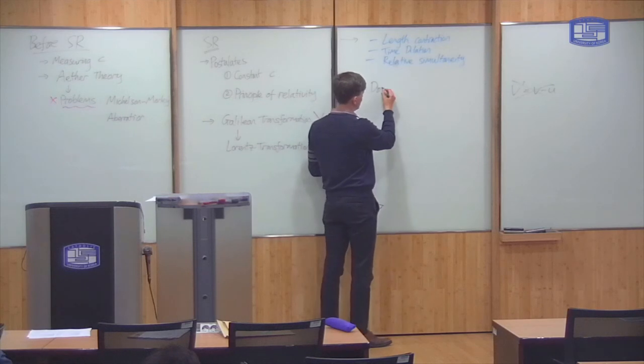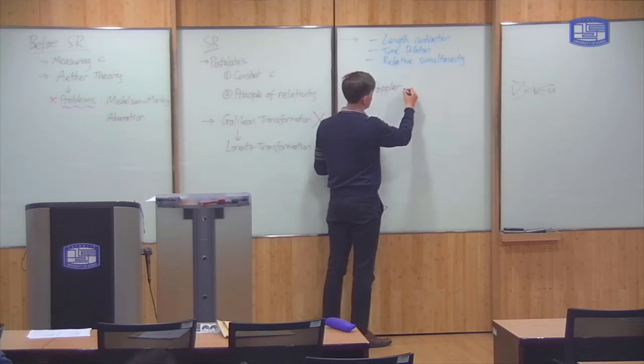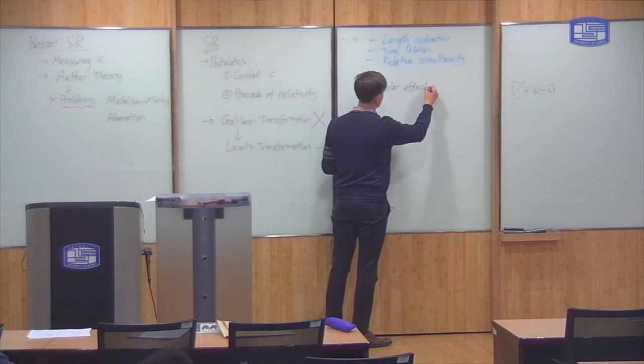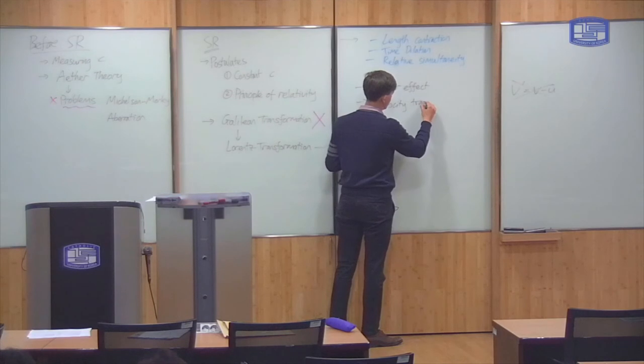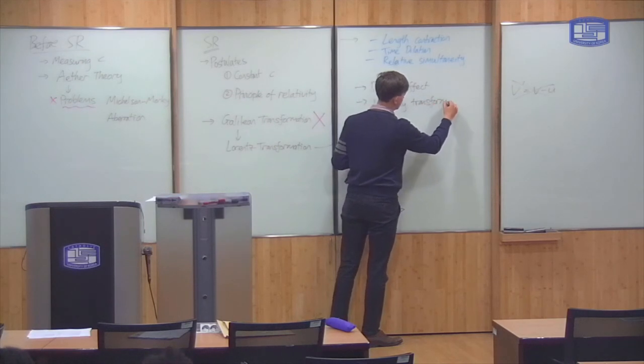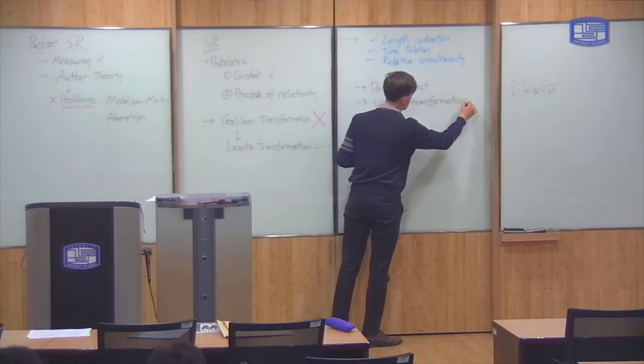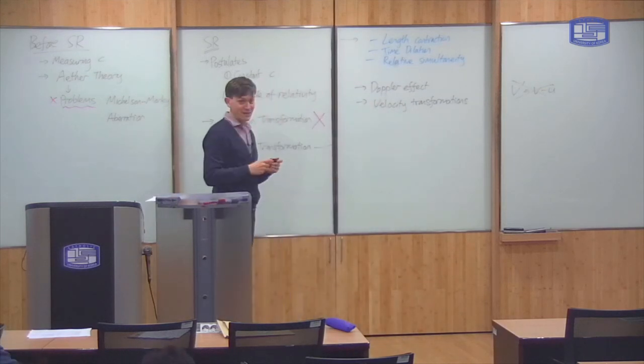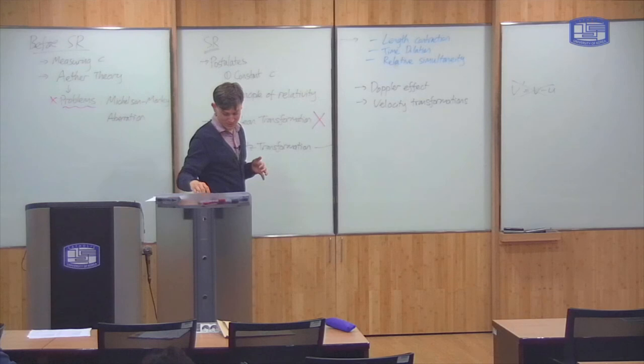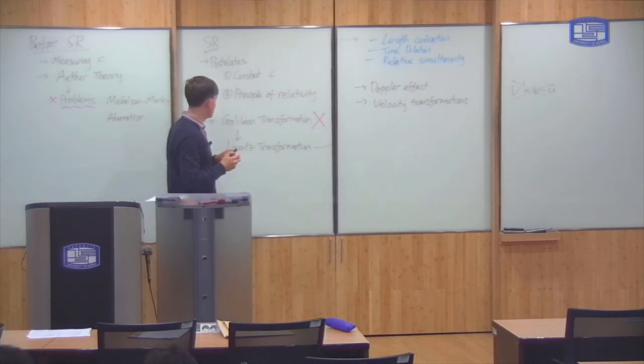For example, we talked about the relativistic Doppler effect. We looked at velocity transformations. How does velocity transform in special relativity? And then, finally, what we've done in the last week is look at the consequences for Newtonian physics.